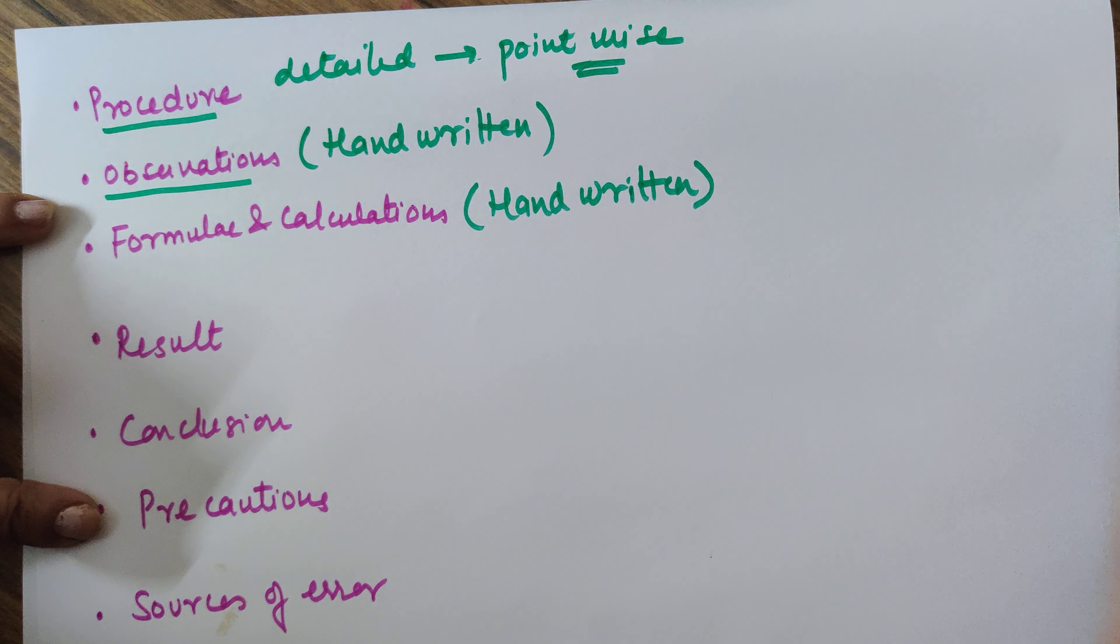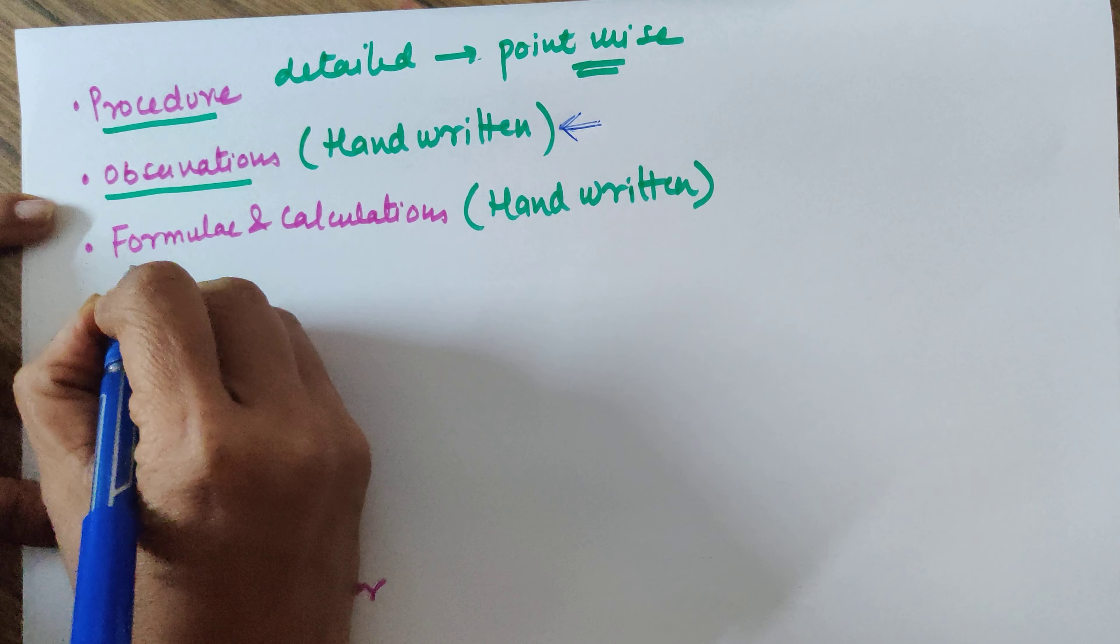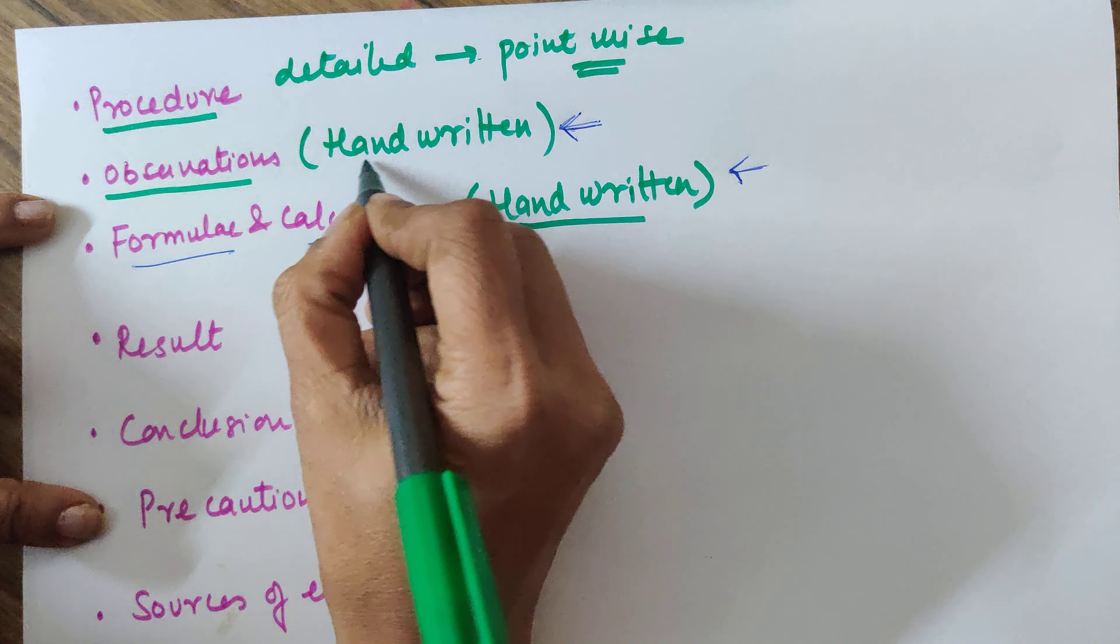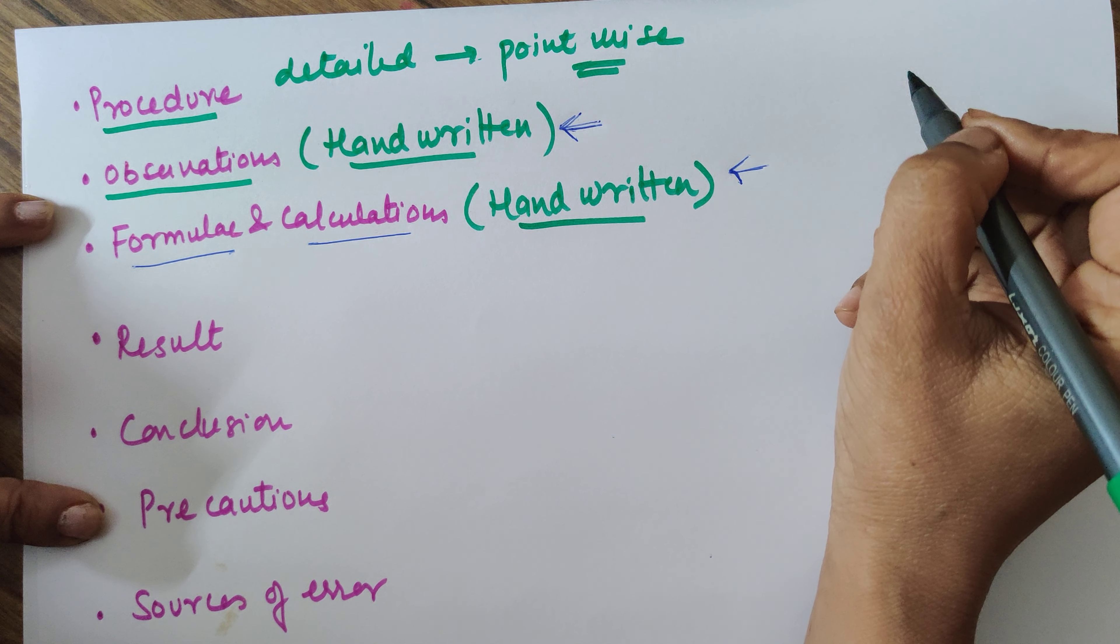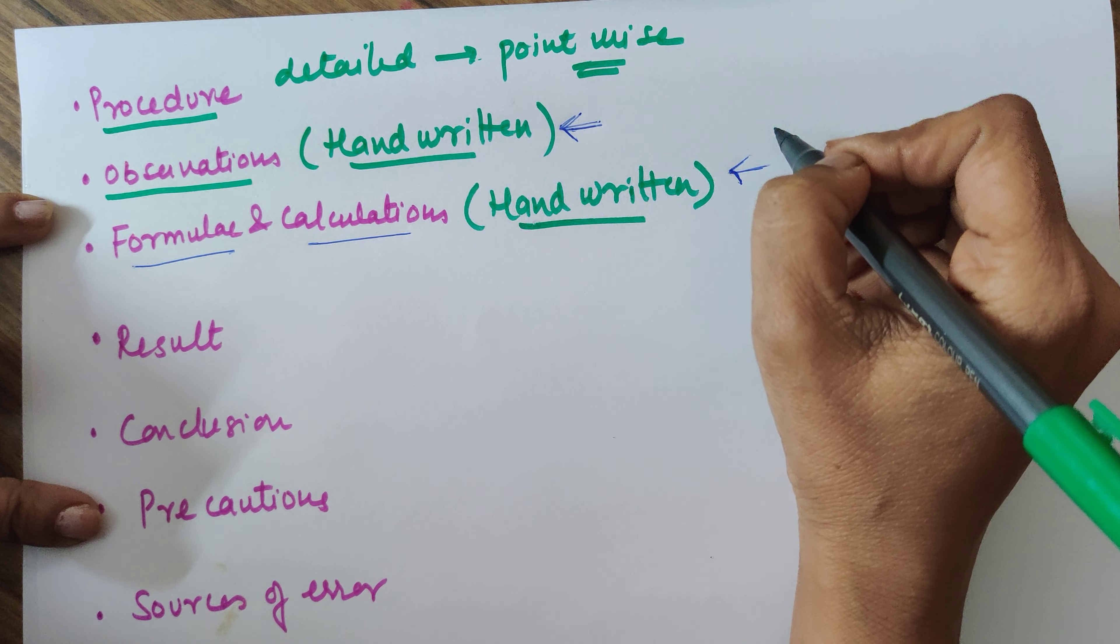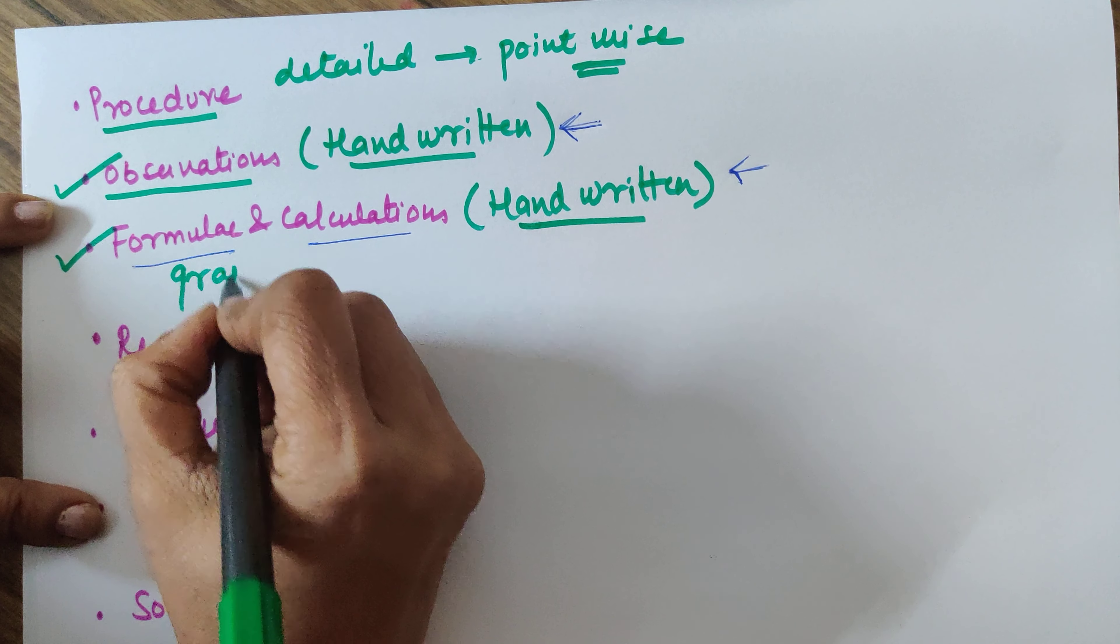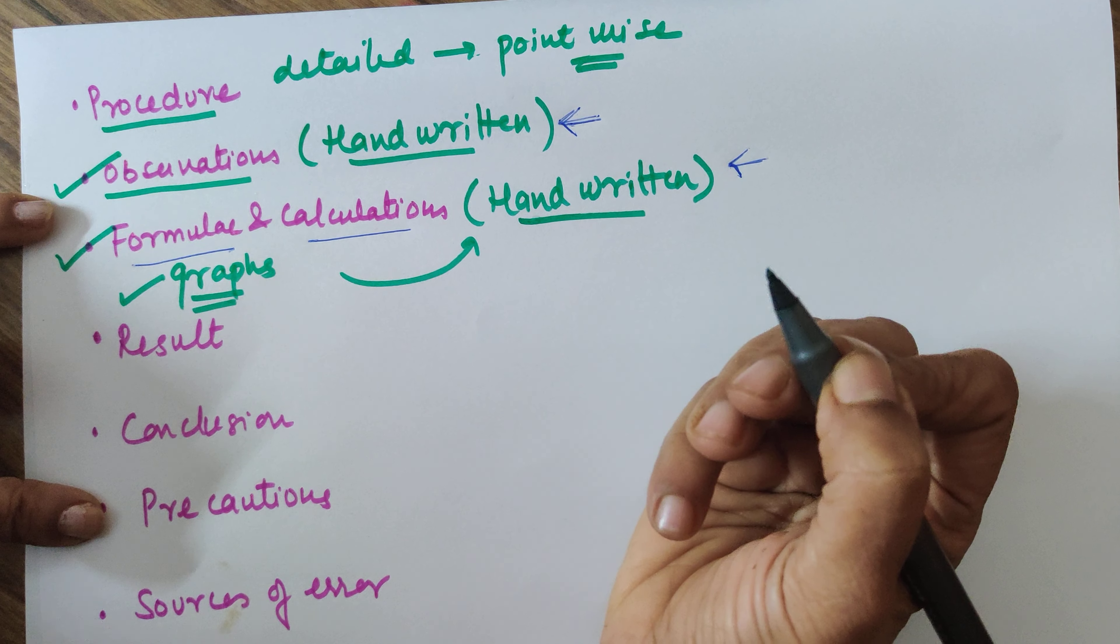Important - please see to it that the observations, observation table, graph, and your formula and calculation, if they are there, they should definitely be handwritten. I advise the whole project to be handwritten, but if you feel your handwriting is not good and you won't be able to do justice to the project, then at least observations, formula and calculation, and any graphs if at all there, please see to it that these are definitely done by your hands.